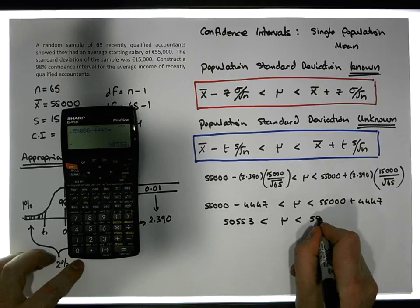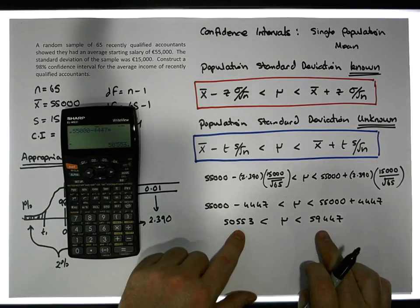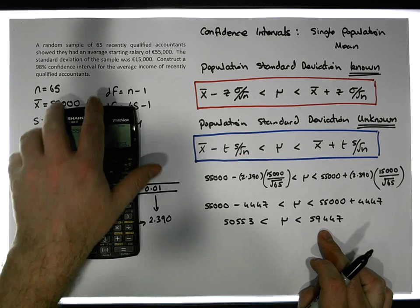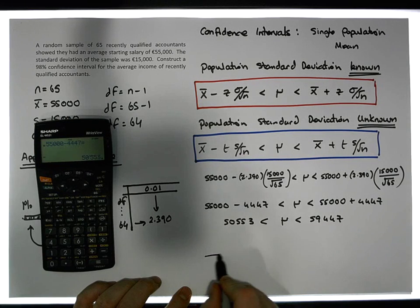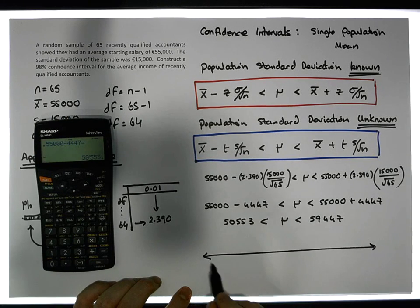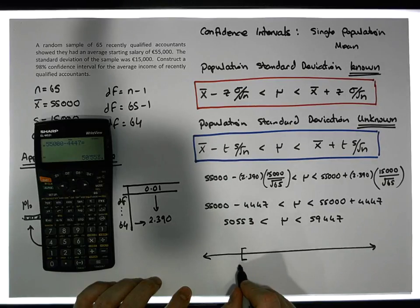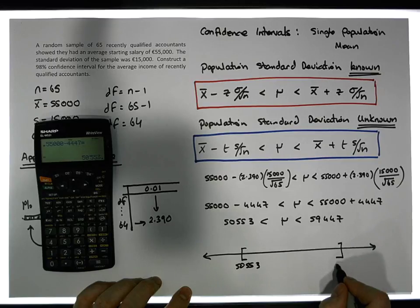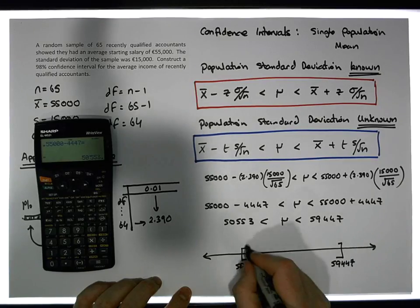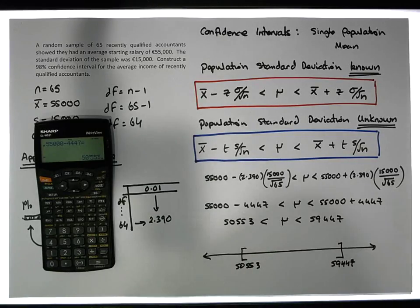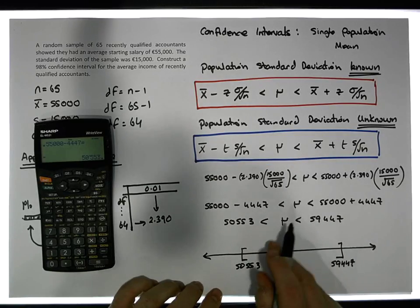What does this look like from a scale perspective? We have our scale with average salaries. The lower bound is 50,553, and the upper bound is 59,447. I probably should do these as open intervals, but let's forget about that at this stage.